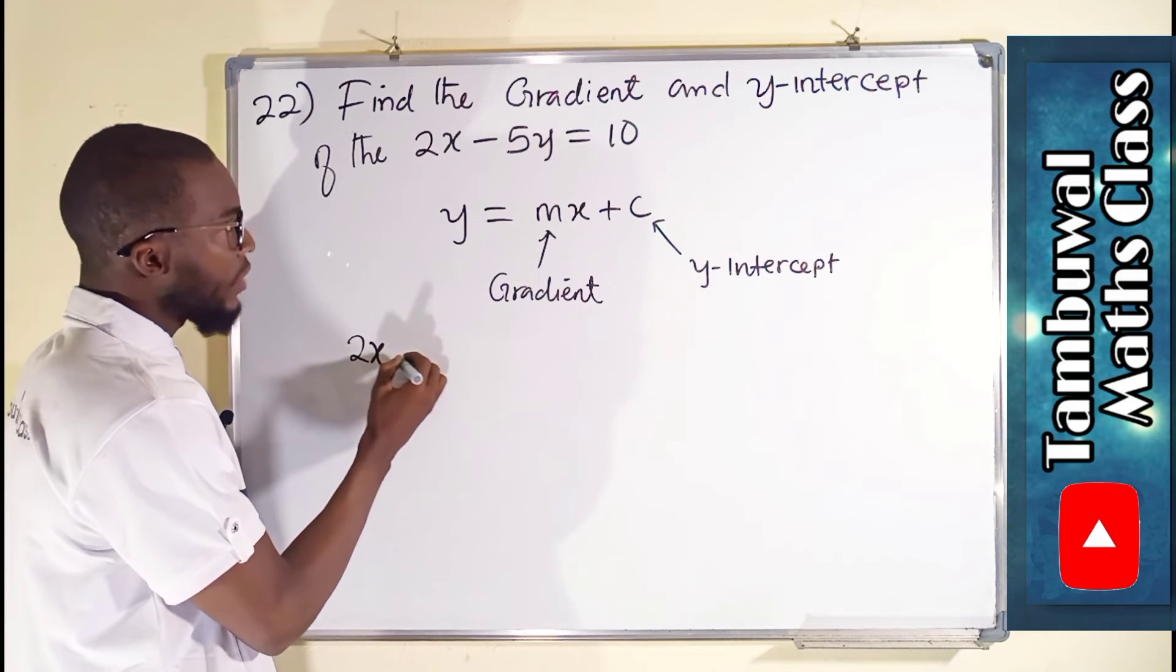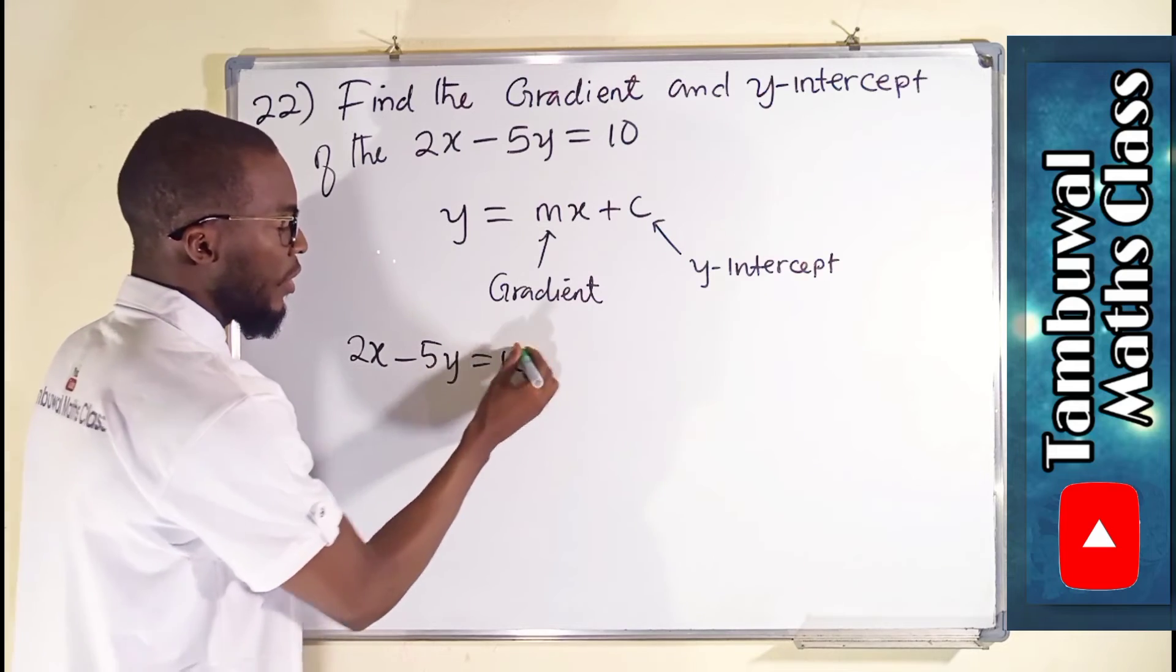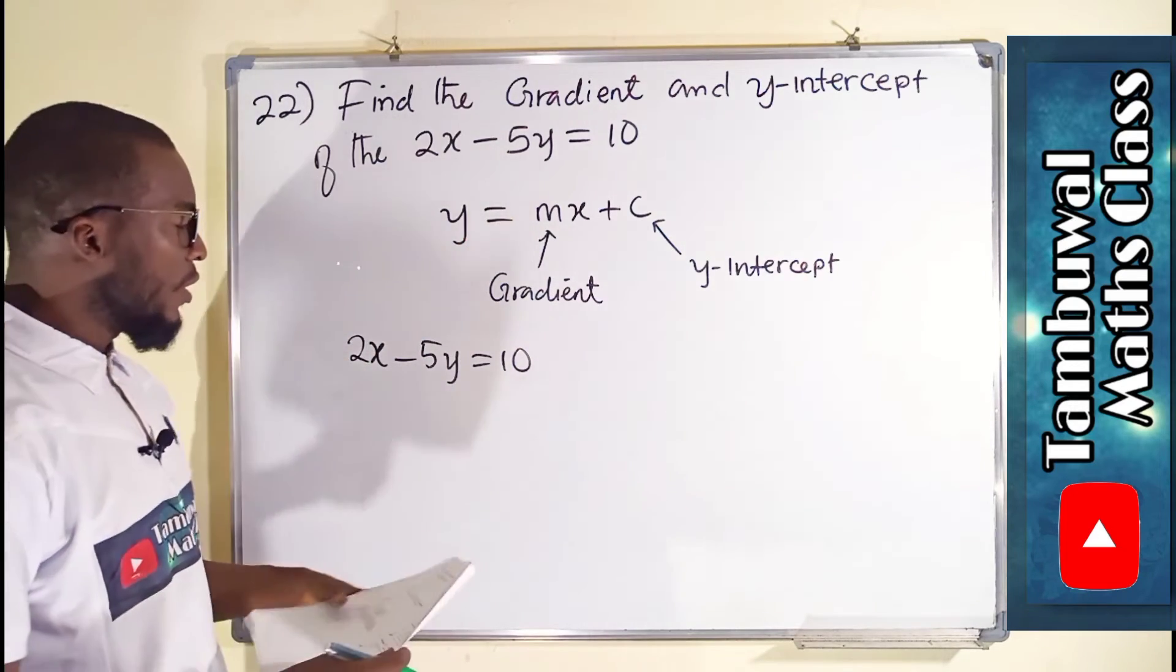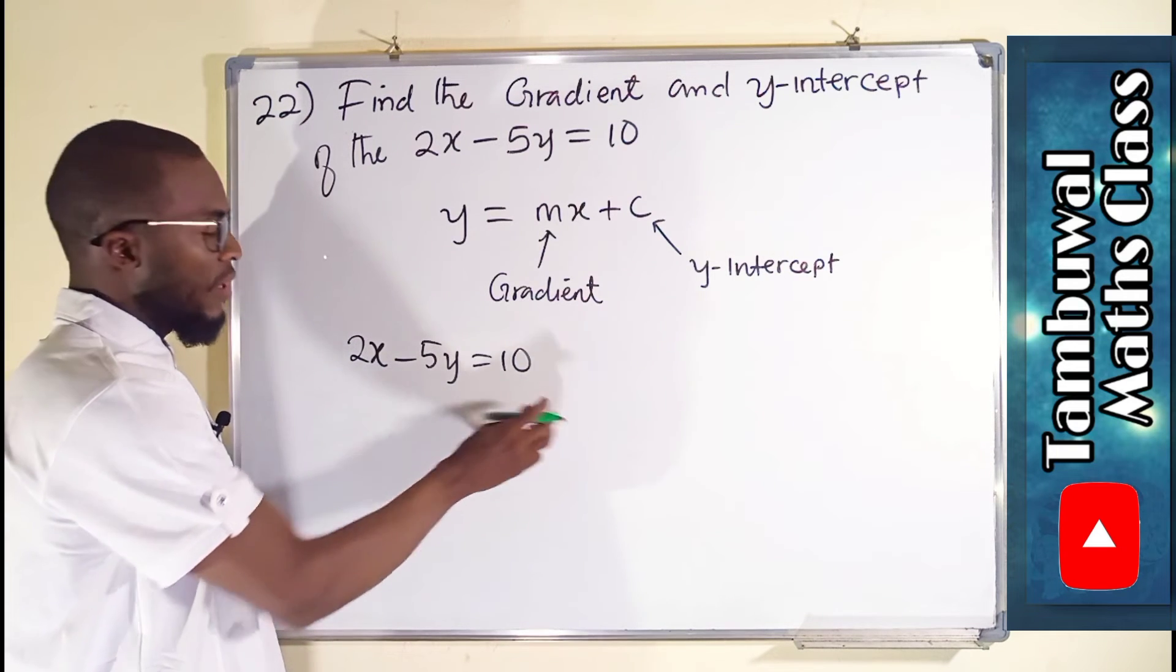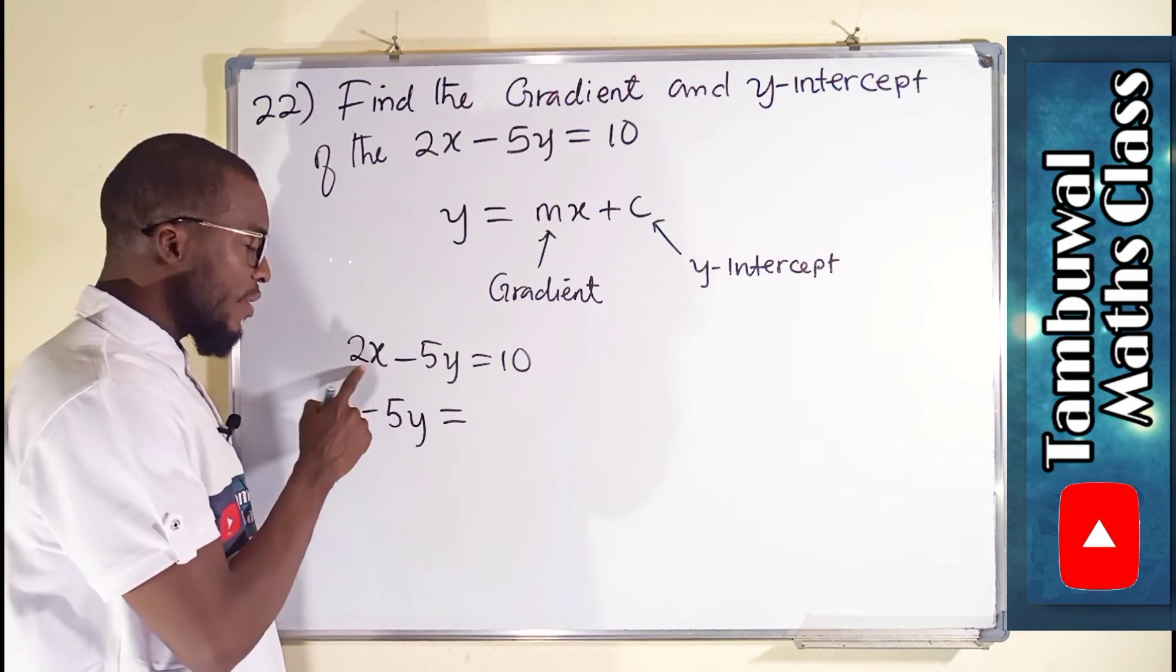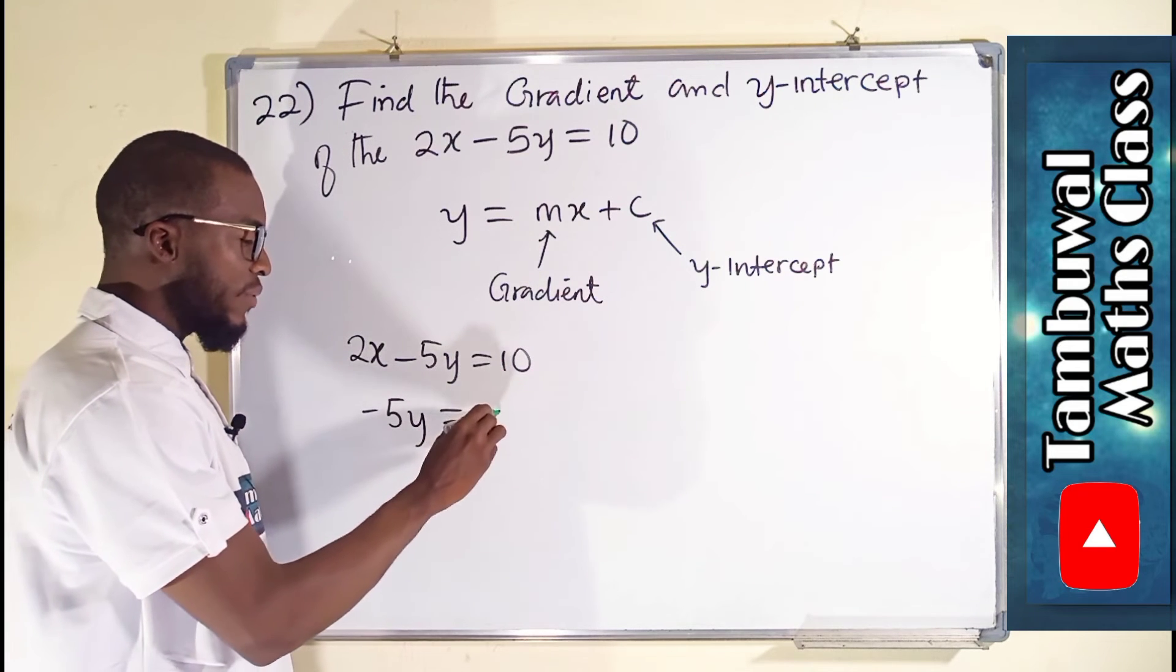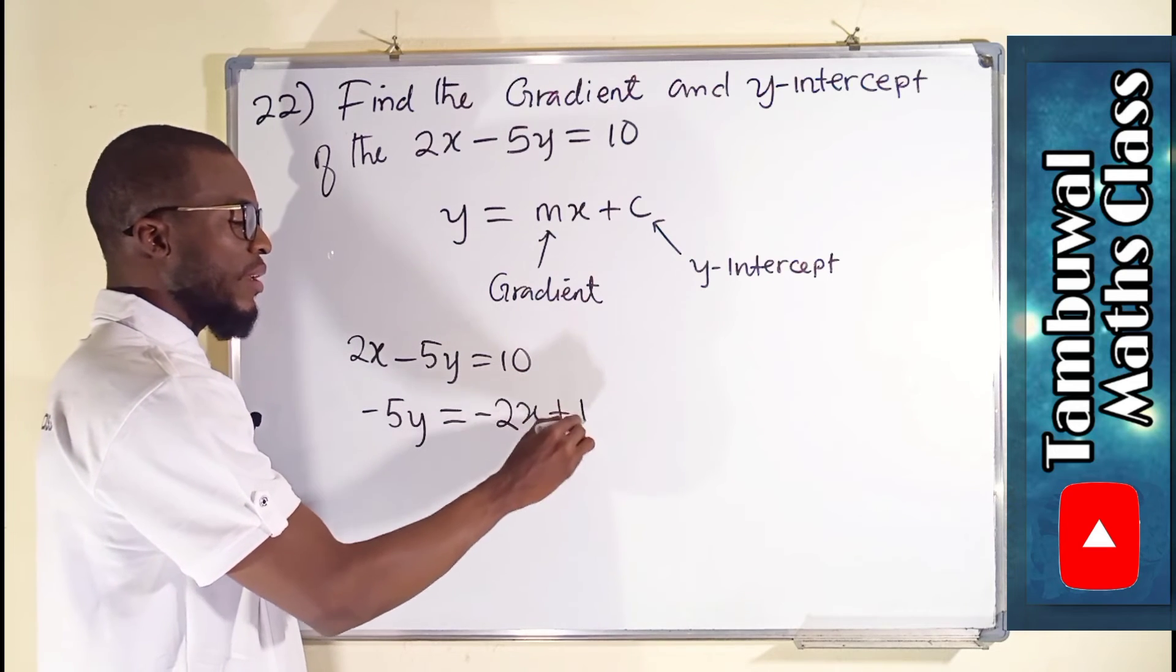This is what we have, 2x minus 5y equals 10. We want to have y to the left-hand side, so we can take this 2x to the right-hand side. So we have negative 5y alone here on the left-hand side. And to the right-hand side, remember, this is going to cross over equality sign. It is positive here. It becomes negative 2x. And our constant is 10 here.